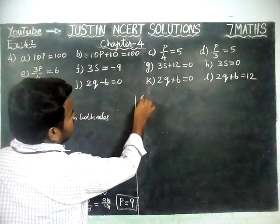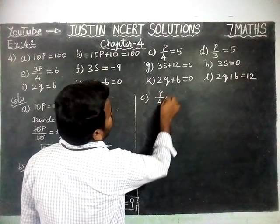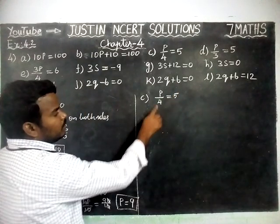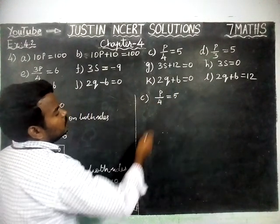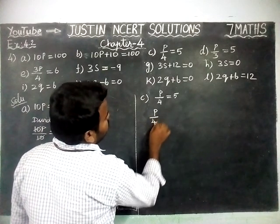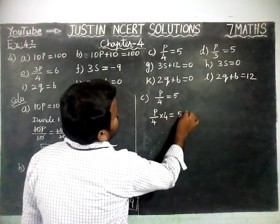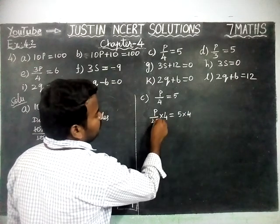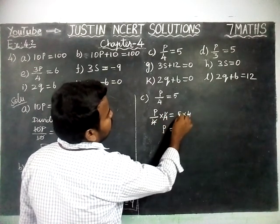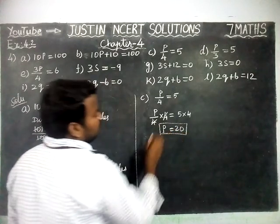Now option C: P divided by 4 is equal to 5. We are going to multiply by 4 on both sides. P by 4 into 4 is equal to 5 into 4. 4, 4 gets cancelled. P is equal to 5 fours are 20. So, P value is equal to 20.